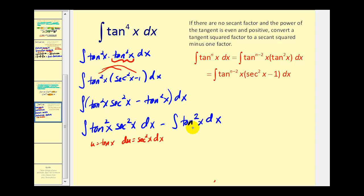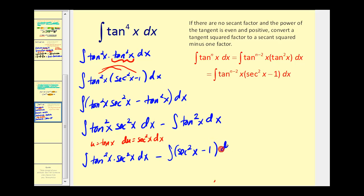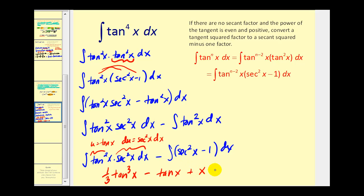The second integral fits the same case again — an even power of tangent — so we replace tangent squared again with secant squared x minus one. For the first integral, u squared du gives an antiderivative of one-third u cubed, and since u is tangent x, that's one-third tangent cubed x. Then the antiderivative of secant squared x is tangent x, and the antiderivative of one is x. So the final answer is one-third tangent cubed x minus tangent x plus x plus c.